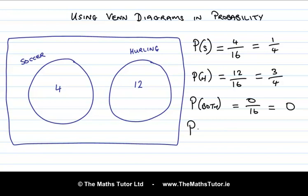What's the probability of picking someone who plays soccer or hurling? We have 4 people who play soccer and 12 who play hurling, so that's 16 out of a total of 16, which is 1. So the probability of picking a soccer player or a hurler is 1 — it's a certainty.